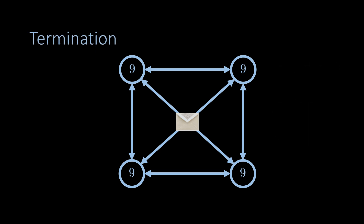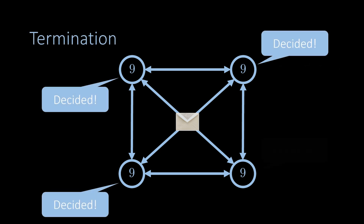Lastly, the third property is called termination, which says that all nodes must eventually decide on a value.